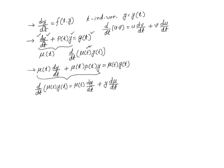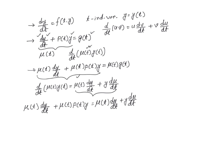Now we compare the two sides. According to our assumption, these two expressions should be equal. We have μ(t)·(dy/dt) on one side and μ(t)·(dy/dt) on the other — these cancel each other out from both sides.